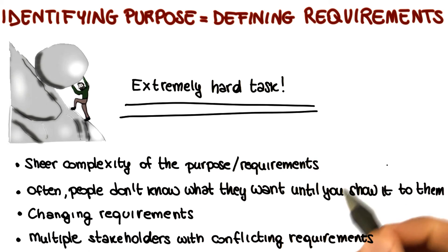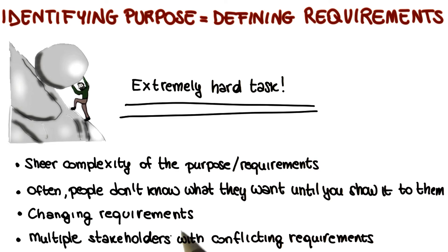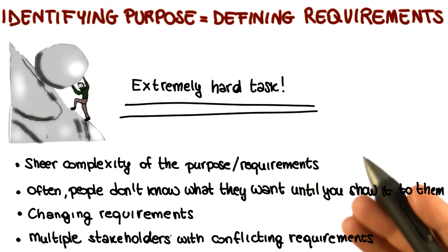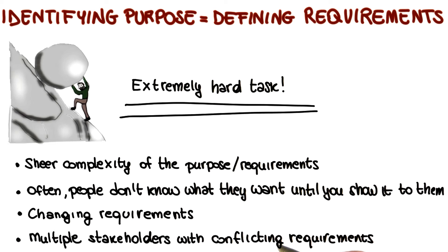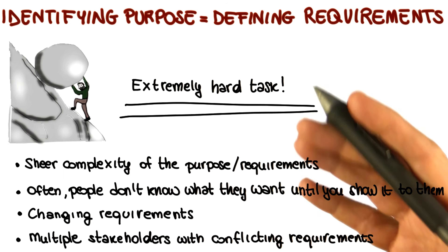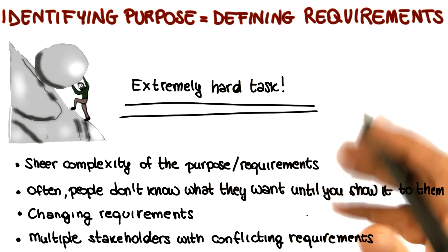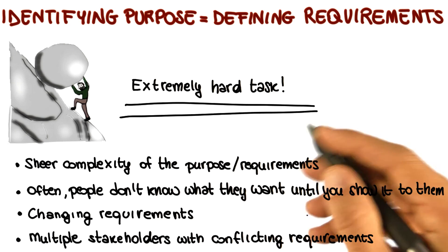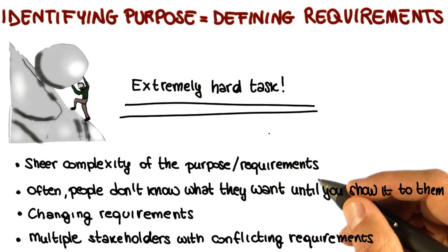Finally, for any realistic system, there are many stakeholders, and they often have conflicting goals and requirements. It can be very hard to reconcile the possibly conflicting requirements that might emerge in these cases. So for all these reasons, it is very, very difficult to perform requirements engineering in an effective way.